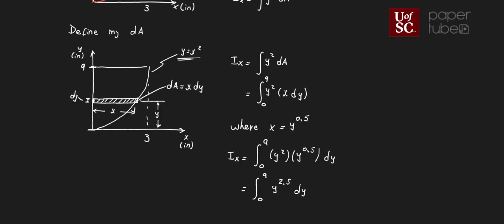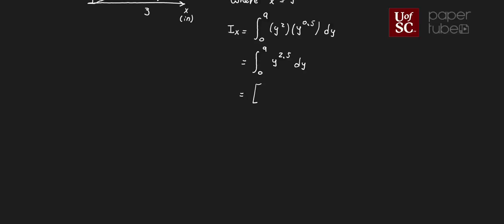And that is not too bad to do, that integral. So that will be the integral of y to the 3.5 over 3.5 evaluated from 0 to 9. And when I do that evaluation, I get 9 to the 3.5 over 3.5 minus 0.